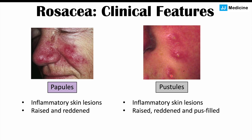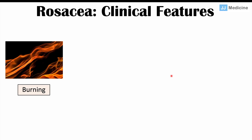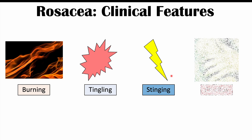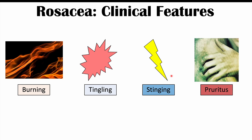Those are the classic skin findings in rosacea, and they come and go recurrently with certain triggers. There are also other skin findings we can see in rosacea patients, including burning sensations, tingling sensations, stinging sensations, and pruritus or itching sensations. These can all be findings in rosacea patients.